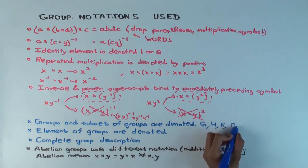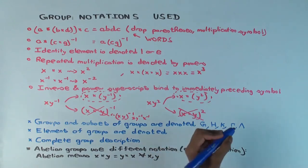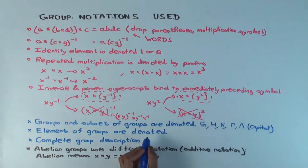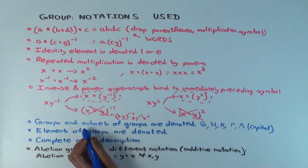And then sometimes Greek letters, gamma, lambda, etc. So there's basically uppercase letters, capital letters. Subsets of groups are also denoted by capital letters. Though sometimes subsets you may denote A, B, C, but still capital letters.